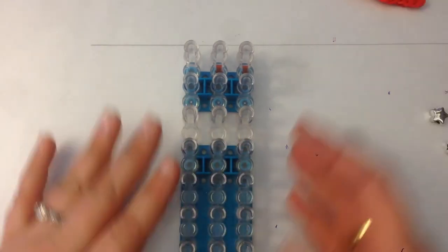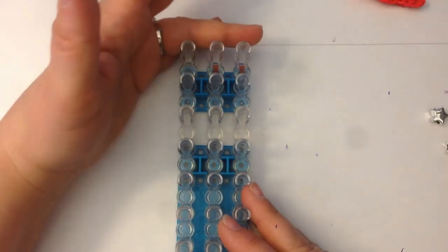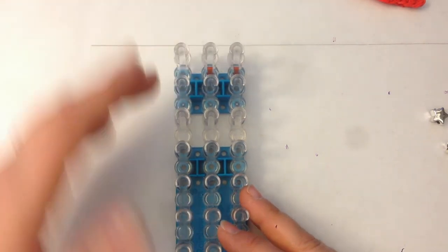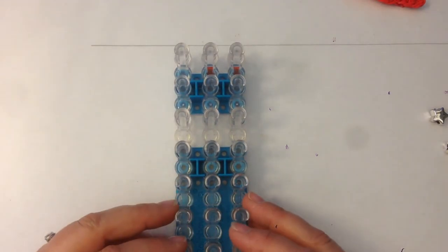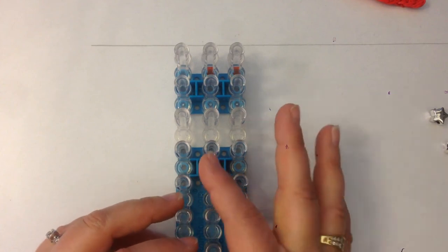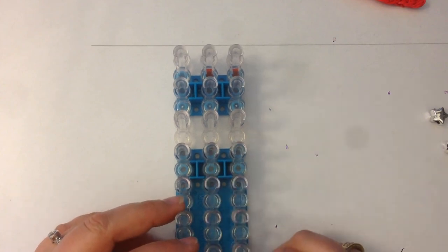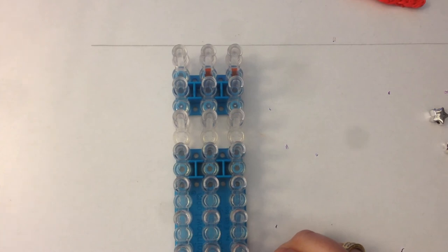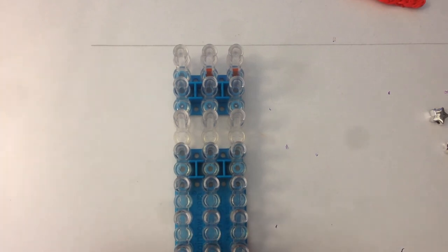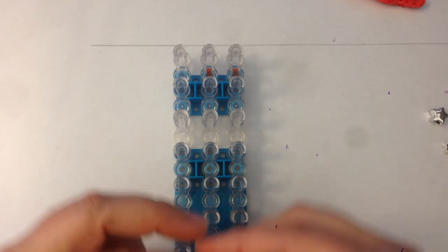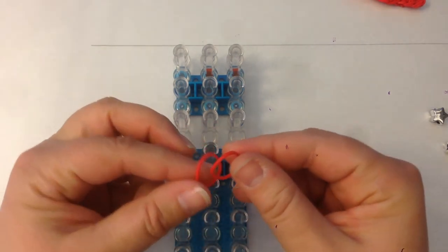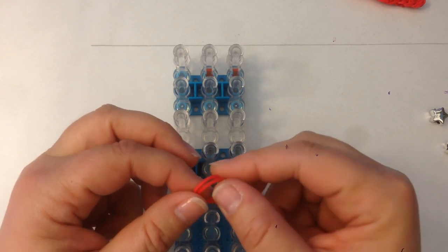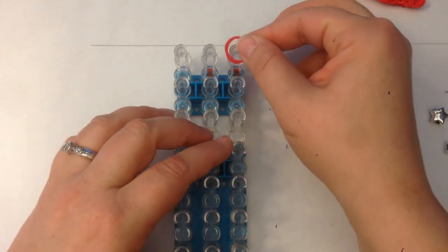We're going to use a single loom in a standard configuration where all columns are the same height. The arrow is going to face towards you, or the open part of the peg that's facing towards you. We're going to be double banding, which means you take two bands and place them on a peg at the same time as if they were a single band. So let's get started.